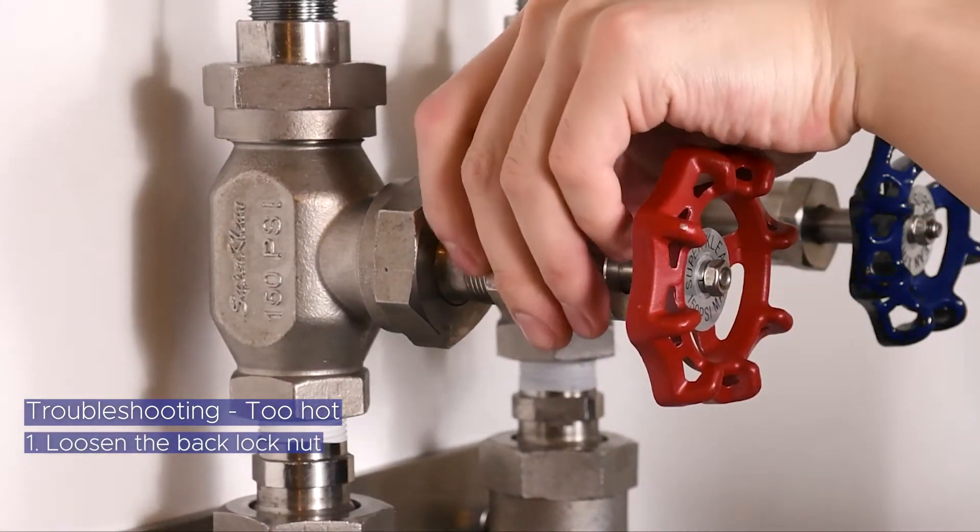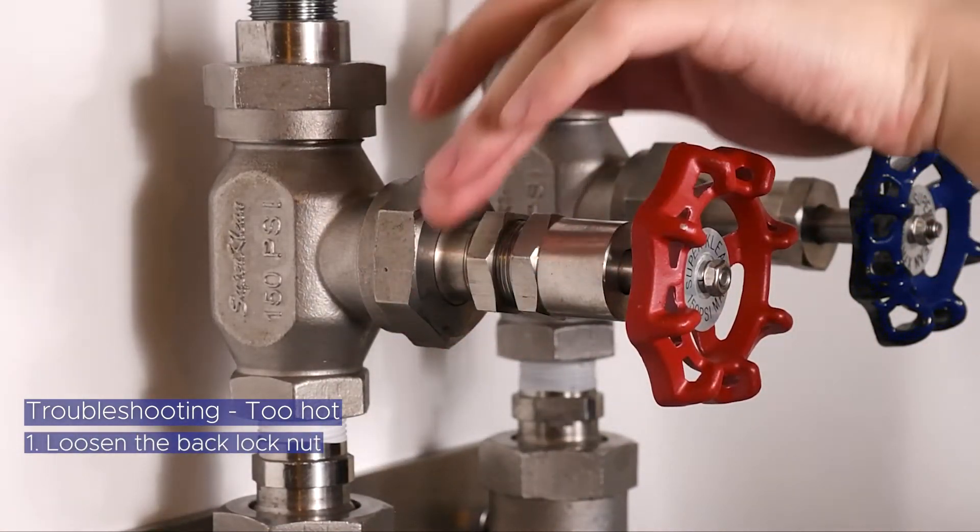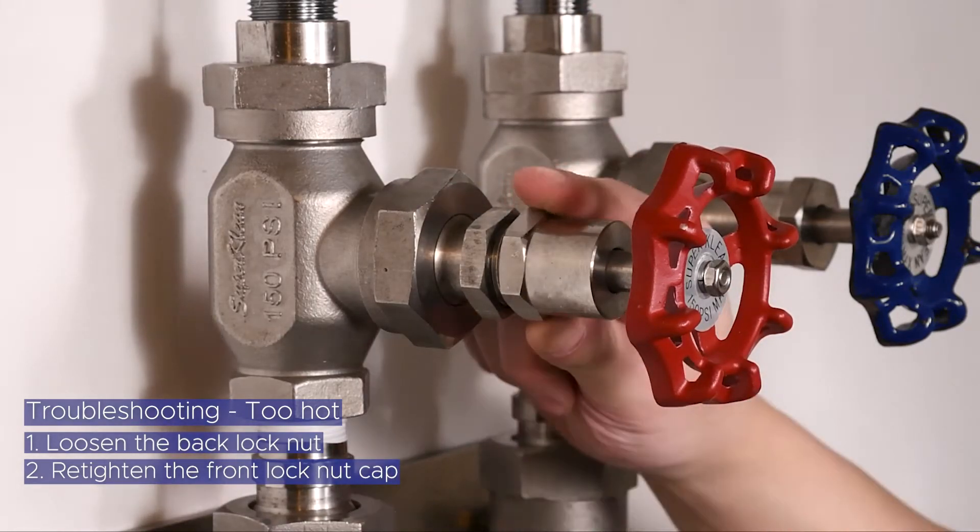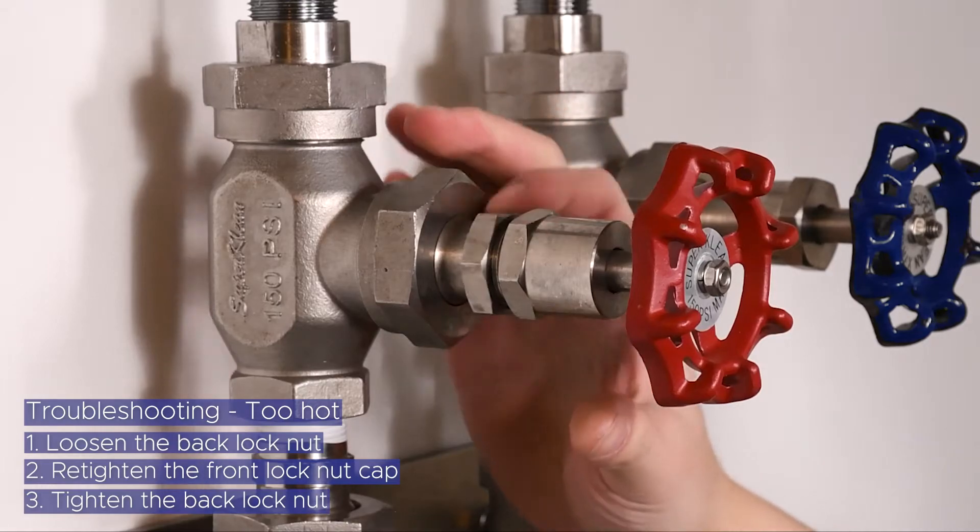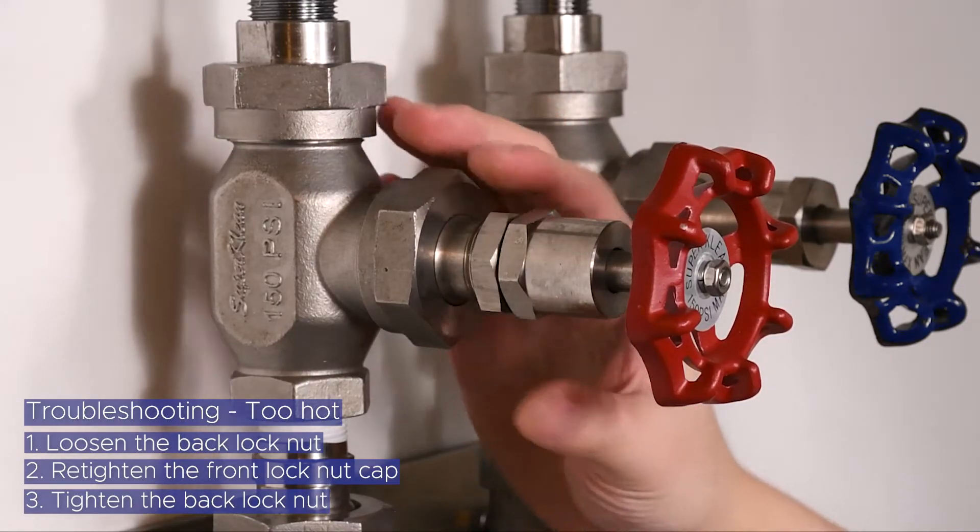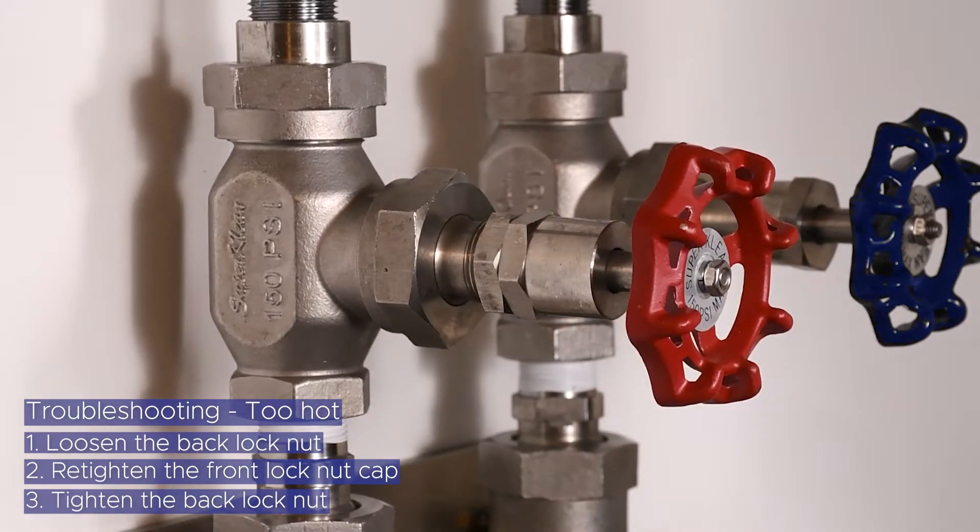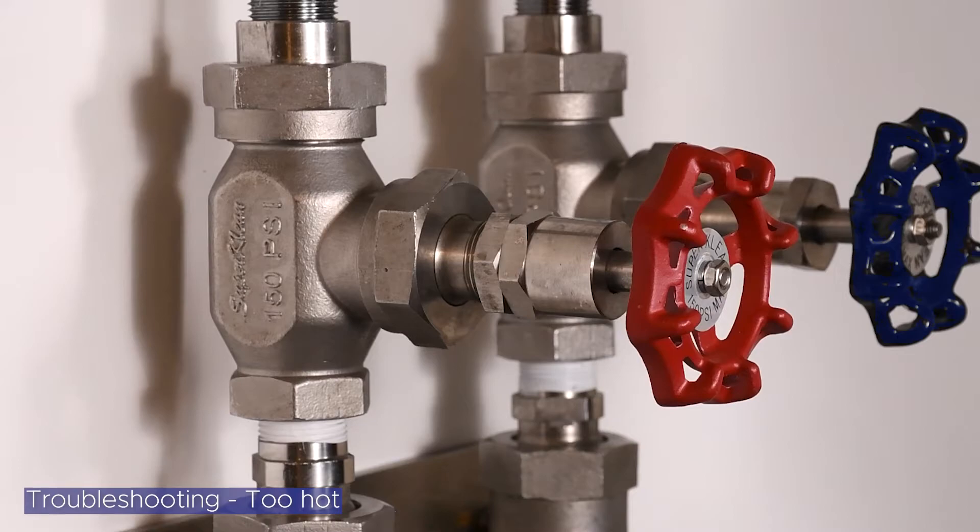loosen the back lock nut by turning clockwise, then retighten the front lock nut cap by turning clockwise until hand tight. Turn the back lock nut counterclockwise until hand tight to secure the lock nut cap. You will now achieve the same water temperature output with every operation. No further temperature adjustments are needed with everyday operation unless your desired water temperature output changes. Simply open the globe valves to begin operation and follow the regular shutdown procedure.